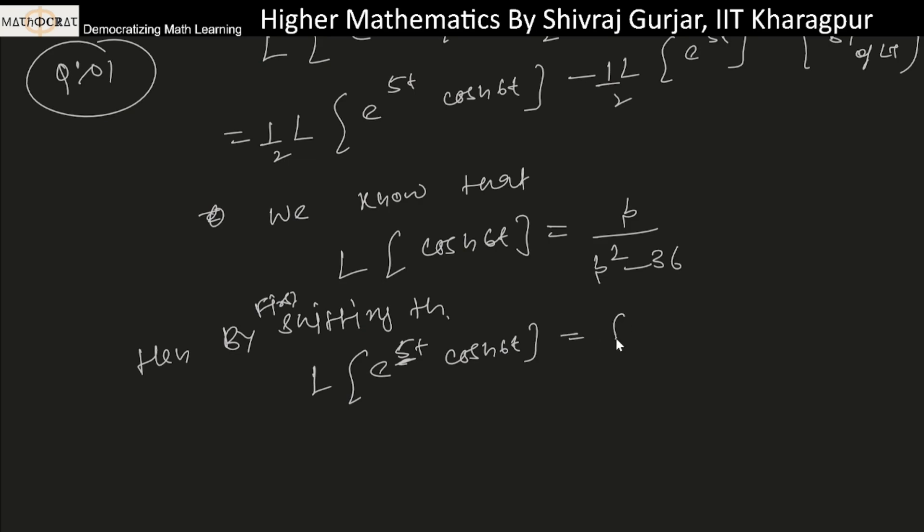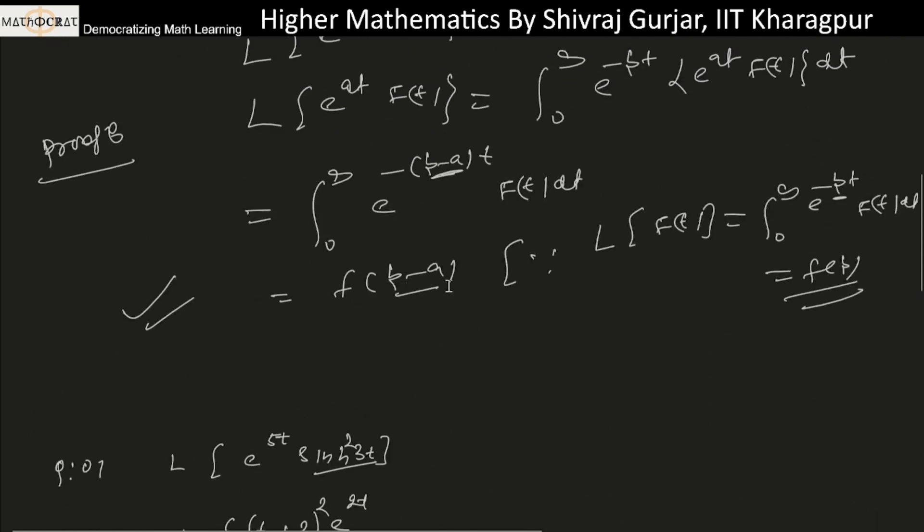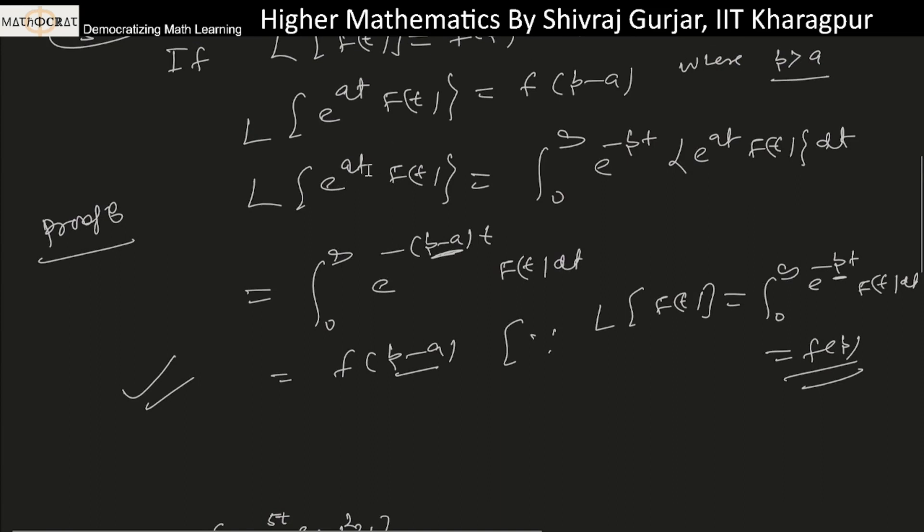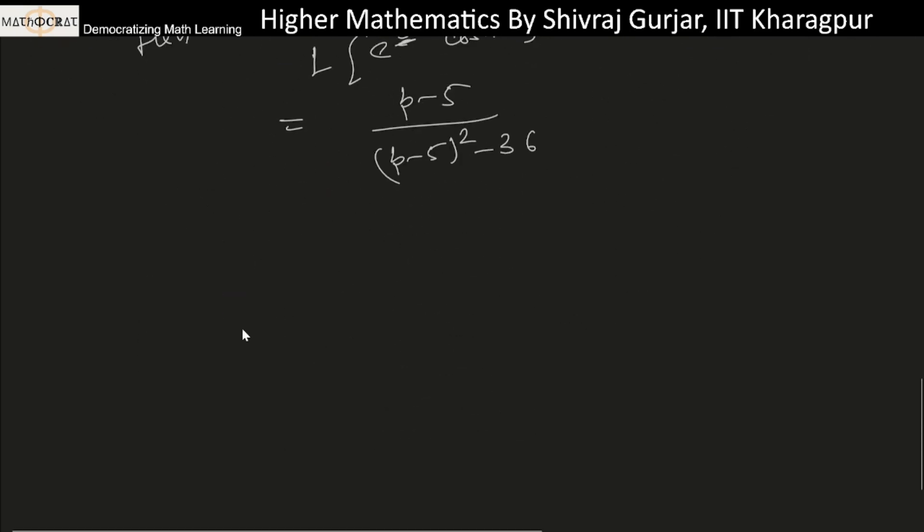That will be f(p minus a), which is f(p minus 5). This is f(p minus a), where a is the coefficient of t. So wherever there is p, we replace it with p minus 5.